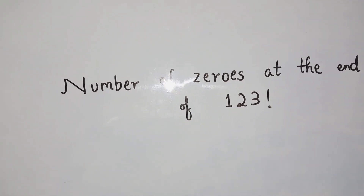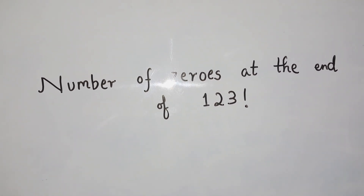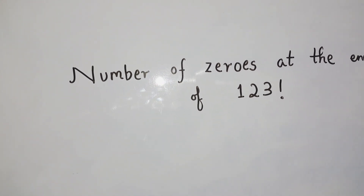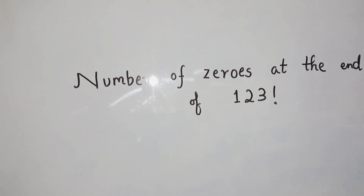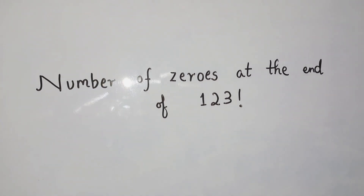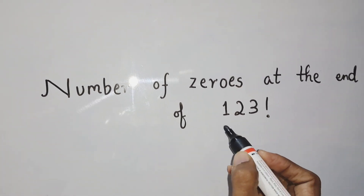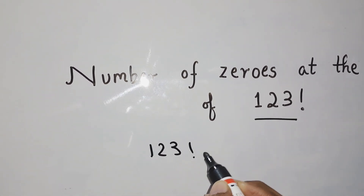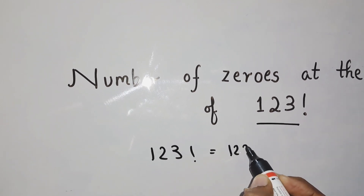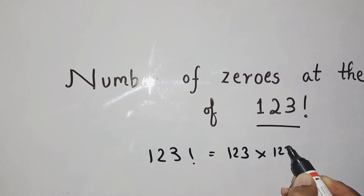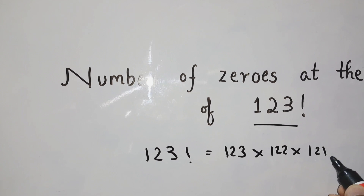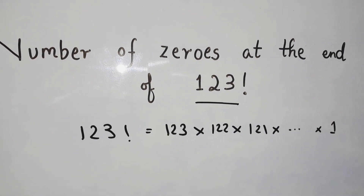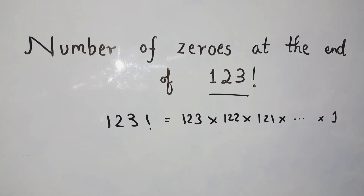Hello everyone. Today we are going to find the number of trailing zeros of 123 factorial — that is, how many zeros are at the end of this factorial. 123 factorial is nothing but 123 × 122 × 121 and so on, down to 1.